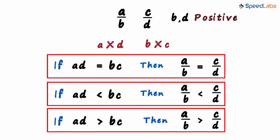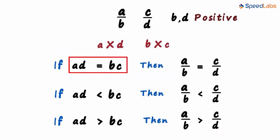That's how simple comparison of rational numbers is. If the products are equal, the rational numbers are equal. If this product is lesser than this one, then the first rational number is smaller. And if this product is greater than this one, then the first rational number is larger.